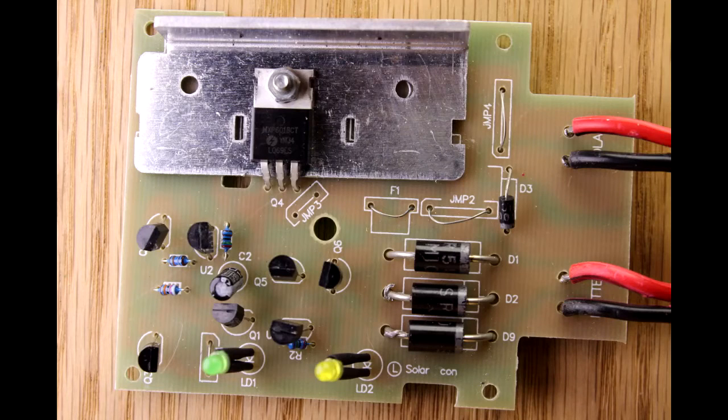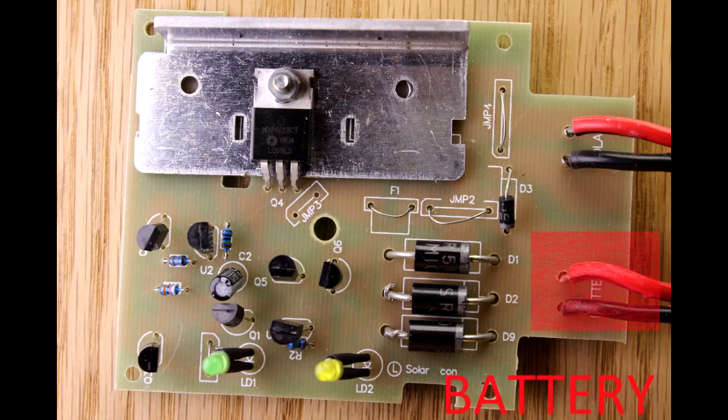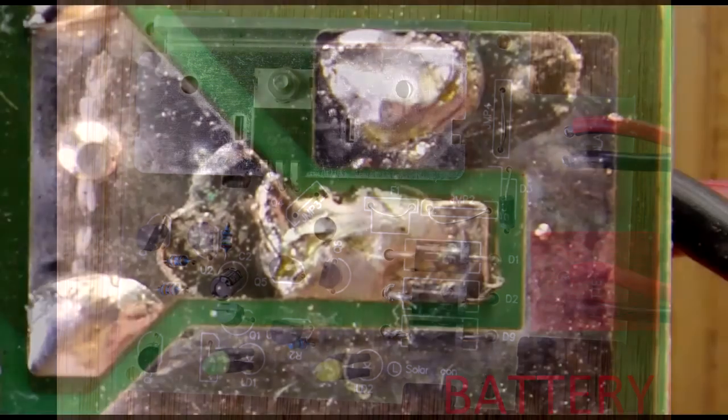So here we are looking straight down onto the circuit board that was in the plastic enclosure. Let's just orient ourselves. There's some leads on the right hand side and some circuitry on the left. On the top there, that's the leads that go to the solar panel and the leads on the bottom go to the battery. We'll tear down the topology in a second but let's take a look first at some of the workmanship and design choices they've made.